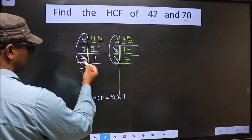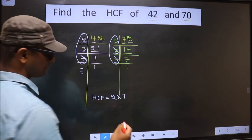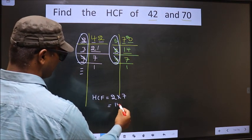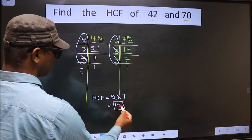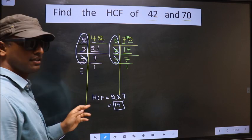No more numbers are left. So, our HCF is 2 into 7, 14. This is our HCF. Am I clear?